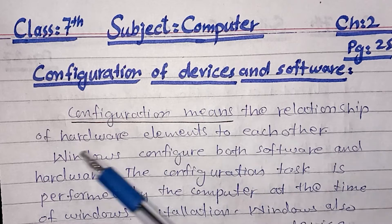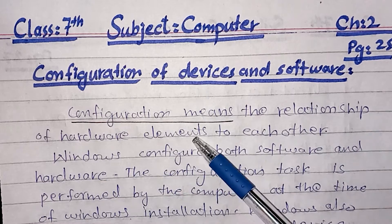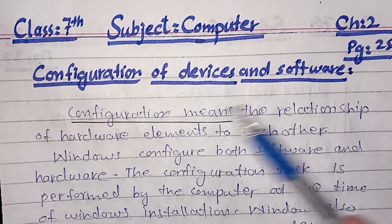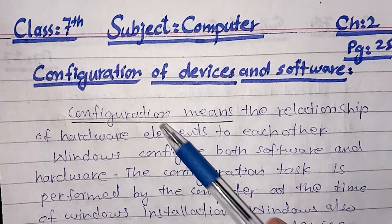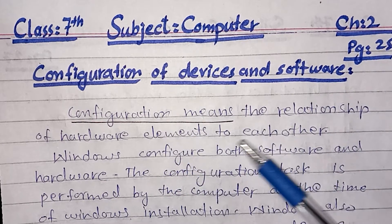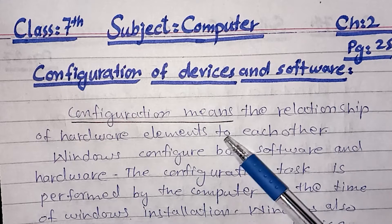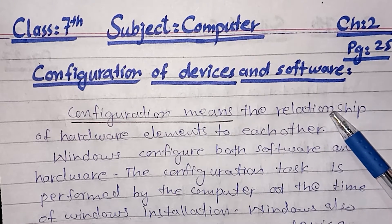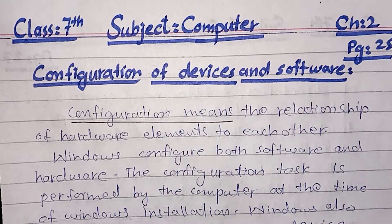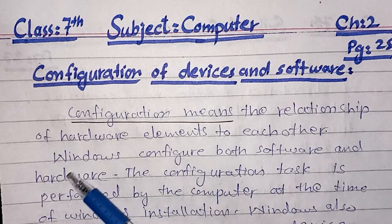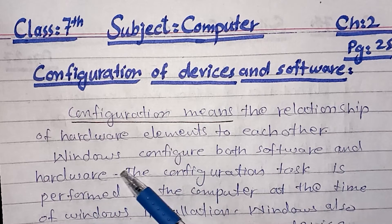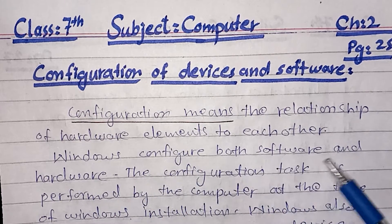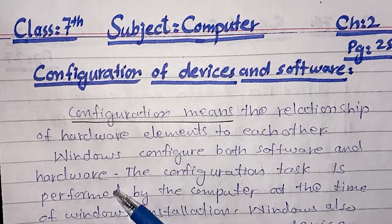Configuration means the relationship of hardware elements to each other. Configuration means the relationship of different parts of computer hardware to each other. This configuration also means Windows configures both software and hardware.